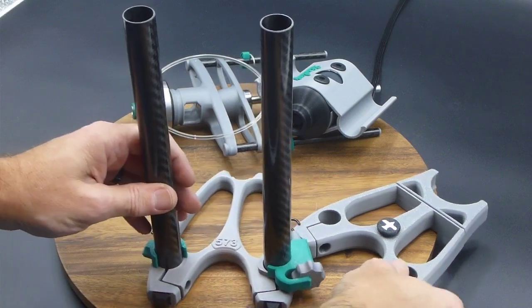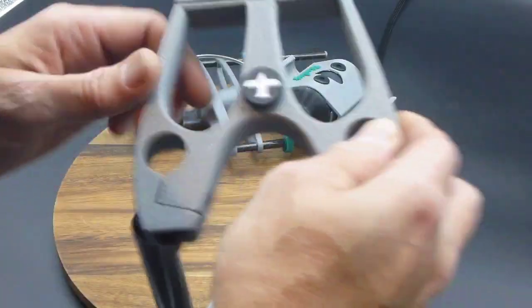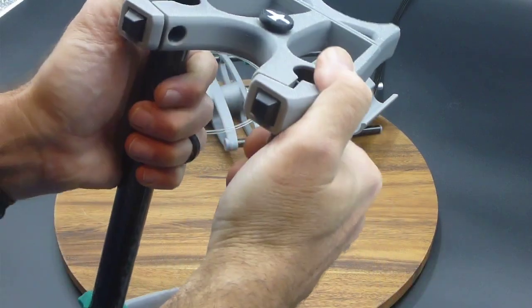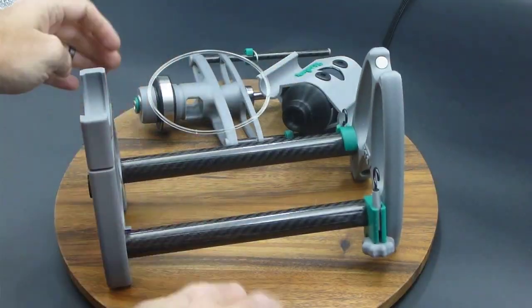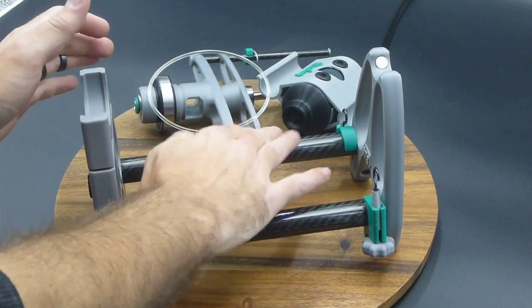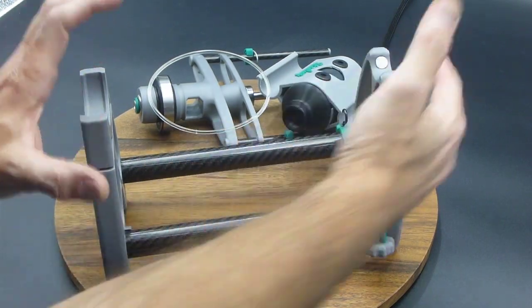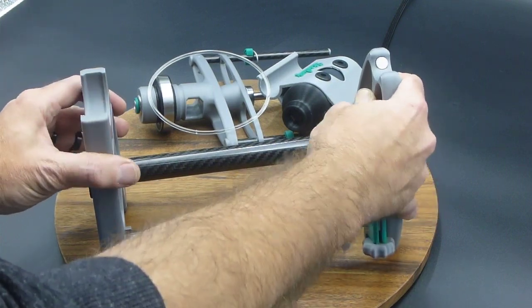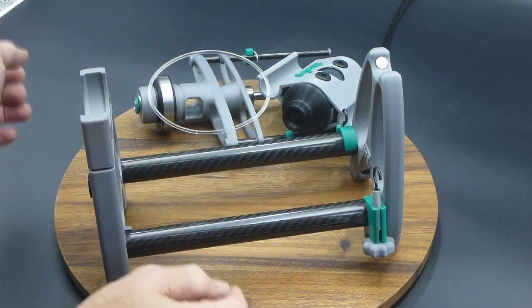And now all we have to do is put the face on. So we'll just slide the face on the tubes on the top. Now we'll set it on a known flat surface to make sure that everything went together real square, so it's not hiking a leg up or anything. So that's nice and flat.